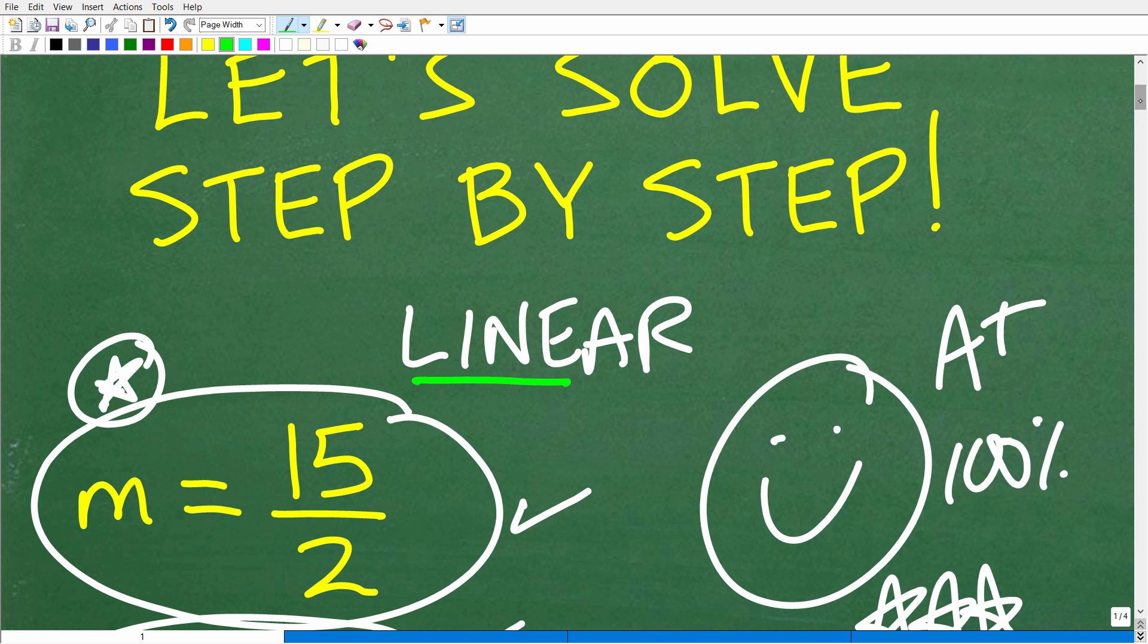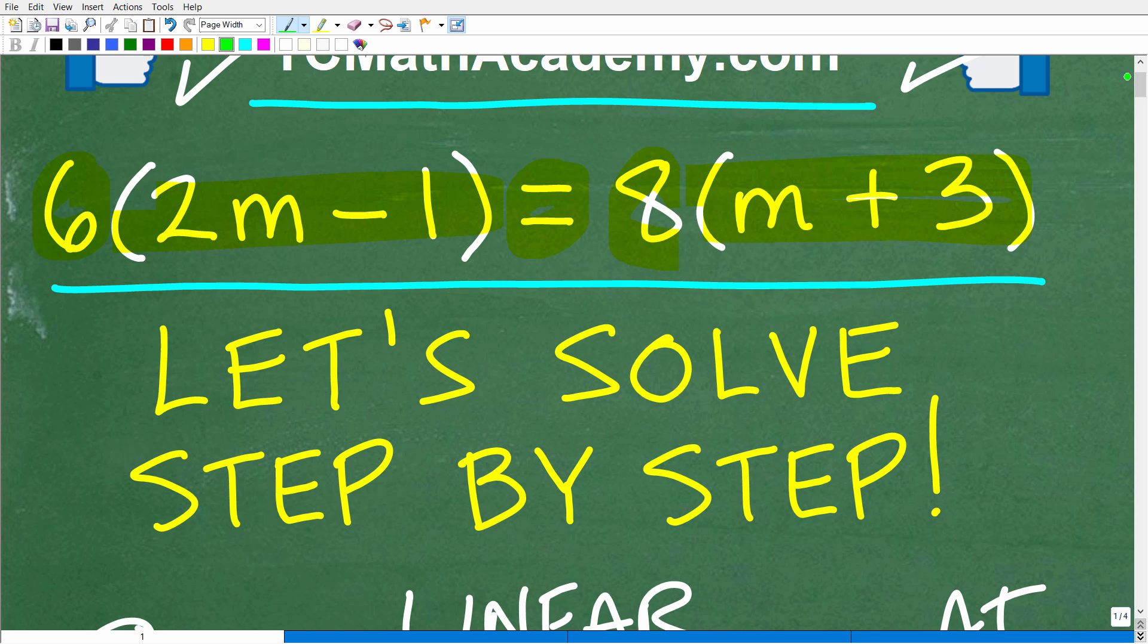But effectively, what makes an equation a linear equation, more or less, is that the variables here that we're dealing with, and in this particular case, we're dealing with one variable, but the variables, the highest power is one.